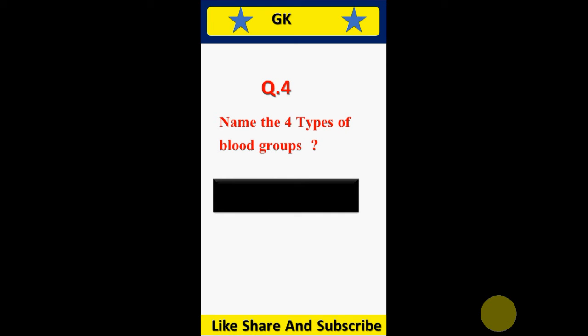Question 4. Name the four types of blood groups. Answer: A, B, AB and O.